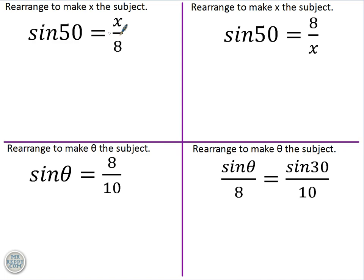Okay, so sin50 equals x over 8. I need to leave x by itself. At the moment, x is being divided by 8. So if I do the opposite and times both sides by 8, then I get 8 sin50 equals x. I can switch the sides around so that I have x on the left-hand side if I want, and I get x equals 8 sin50.